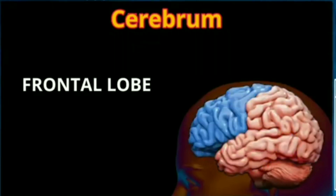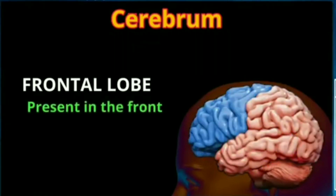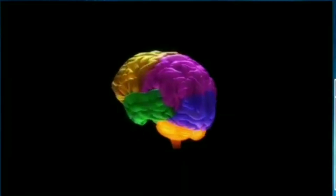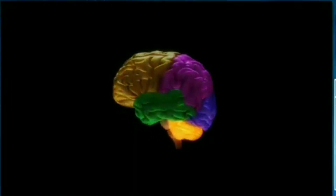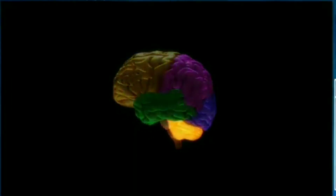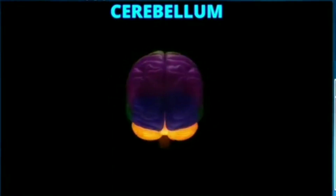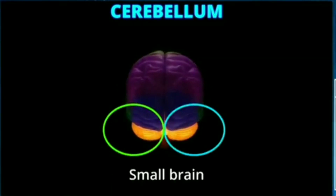Yes, it is this one — the one present in the front. The next highlighted lobe is called the parietal lobe. The next lobe is called the temporal lobe. The fourth and last lobe is the occipital lobe. The small bulge at the back of your brain is called the cerebellum. Just like the cerebrum, the cerebellum is also divided into two halves. It is called the small brain.